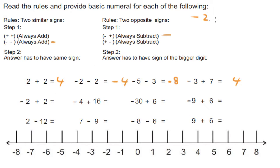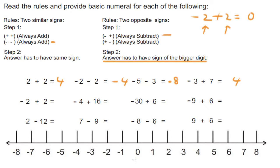Now this one is interesting: negative two plus two. Two opposite signs, so we subtract. Two minus two is zero. For step number two, the answer has to have the sign of the bigger digit — but neither digit is bigger than the other. The answer cannot be positive and cannot be negative. Zero is right in the middle of the positive and negative domains, so zero can never be positive, can never be negative. Zero is just zero, right in the middle.